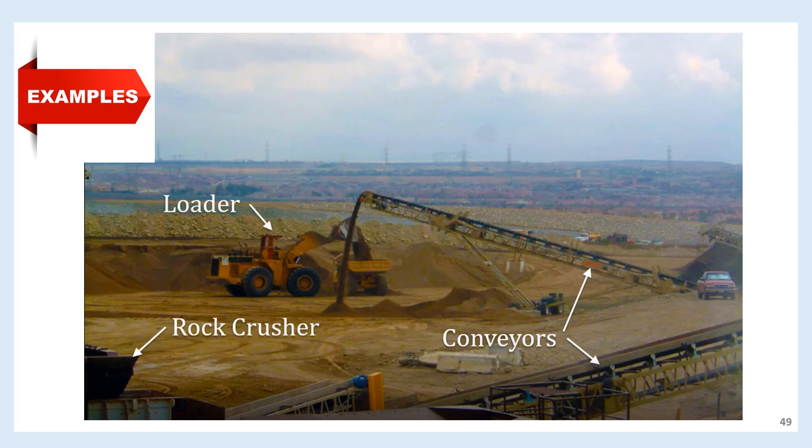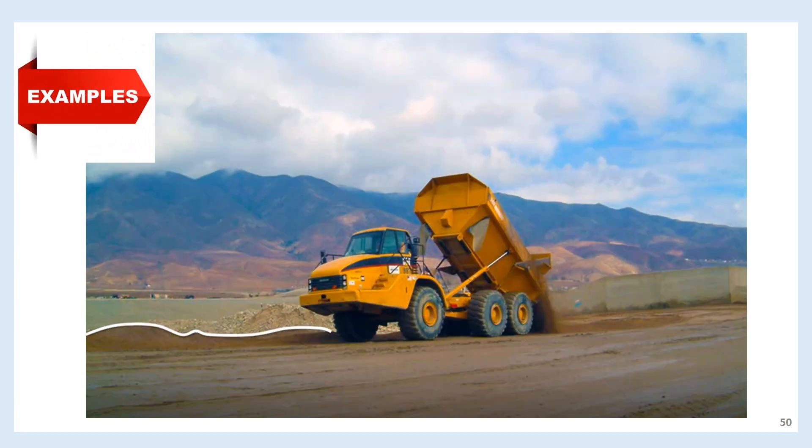This dump truck will transport the sand to the fill area. Situation 3: Here you see the dump truck from the previous example in situation 1 dumping the fill material at its intended location. You'll note that at this point the fill isn't placed very smoothly. Before the fill can be compacted, it must be smoothed out to a uniform thickness.